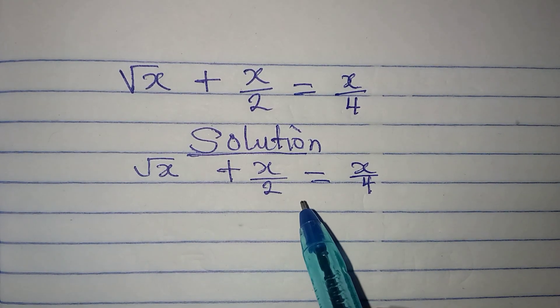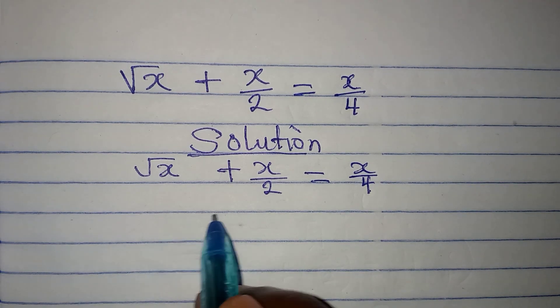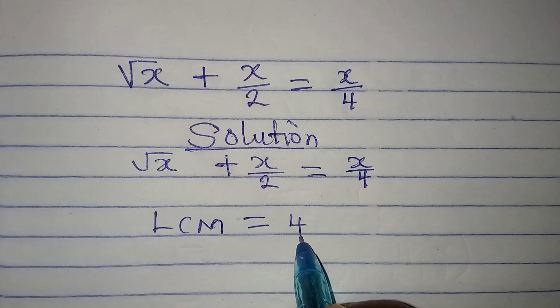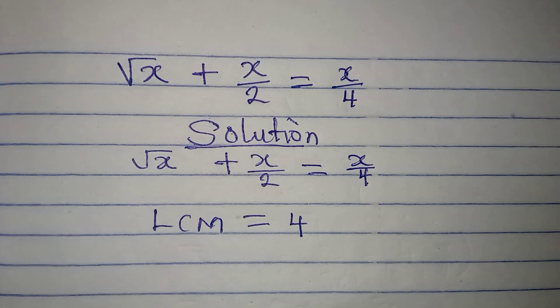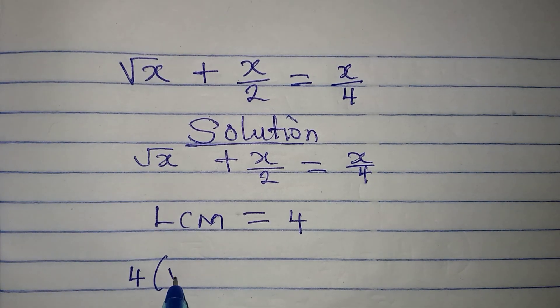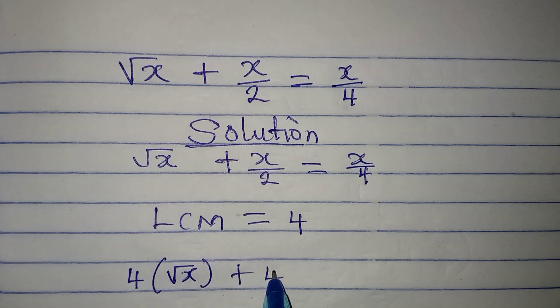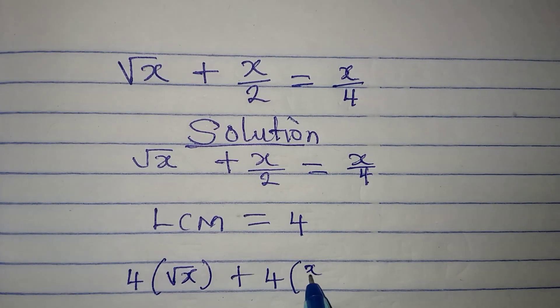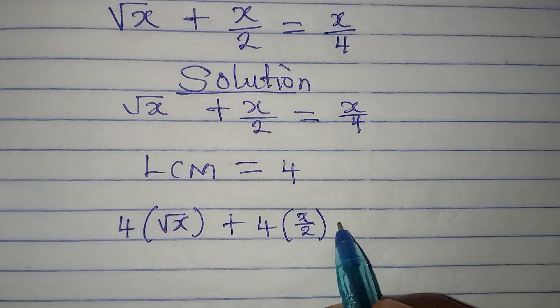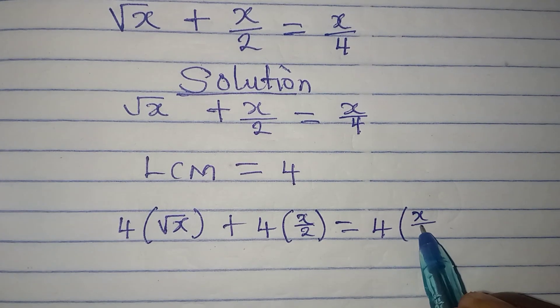Let's take a look at it. Now the LCM of 4 and 2 is equal to 4. The first step is to multiply everything by the LCM, so we have LCM multiplied by square root of x plus LCM multiplied by x over 2.